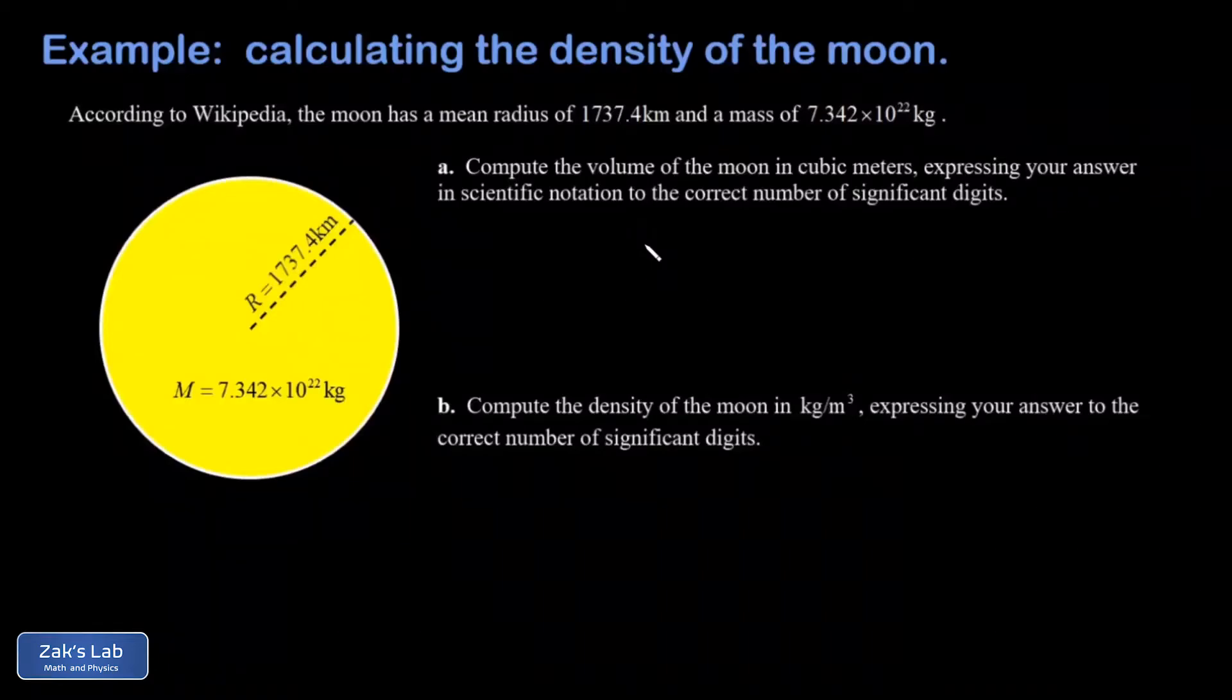In this video, the ultimate goal is to compute the density of the moon based on simple astronomical data from Wikipedia, and we're going to pay close attention to using the correct number of significant digits in our calculation.